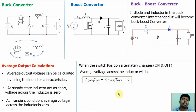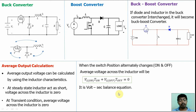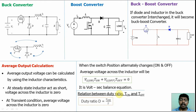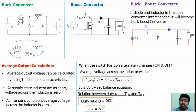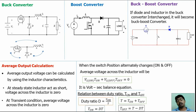This equation — VL(on)·T(on) + VL(off)·T(off) = 0 — is called the volt-second balance equation. By using the volt-second balance equation we can derive the average output voltage. You should also know the relation between duty ratio, on-time, and off-time. Duty ratio D is defined as T(on) / T. So T(on) = D·T. Since T = T(on) + T(off), we get T(off) = T − D·T = (1−D)·T. These formulas you should know.